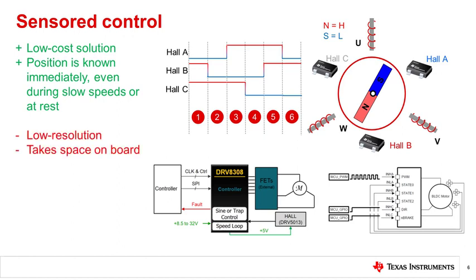The disadvantages to Hall sensors are that they are a low-resolution solution compared to encoders and resolvers, and they require space on the board or on the motor itself to function.